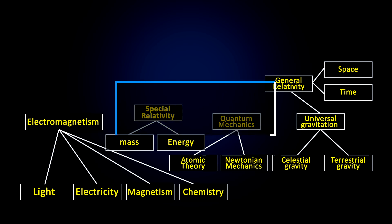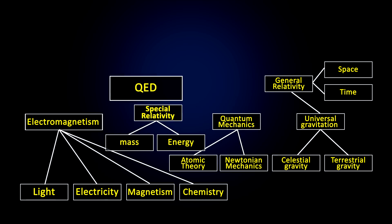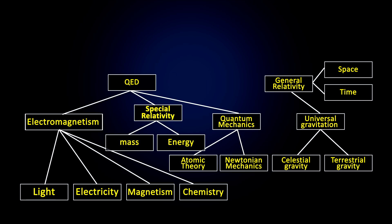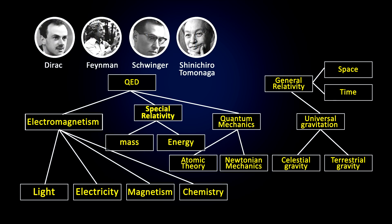In the 1940s, special relativity, quantum mechanics, and electromagnetism were unified with the theory of quantum electrodynamics, mainly by Dirac, Feynman, Schwinger, and Shinichiro.